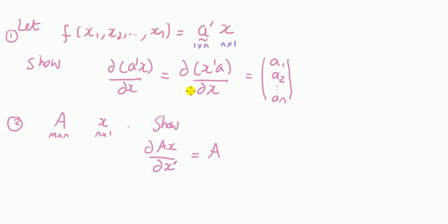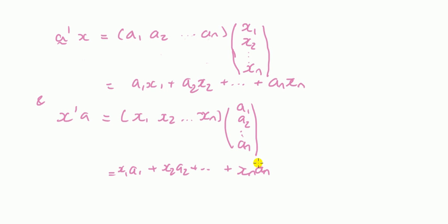One area in stats where we use this is to compute the score and the information matrix when we're dealing with maximum likelihood. Alright, proof for the first one. So we're looking at this linear combination of x, writing it down in full.